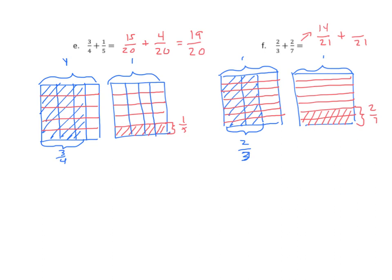Now we're going to partition the second addend using two vertical lines, cutting it into three equal parts. We see that six are shaded — the same as multiplying: seven times three is twenty-one, and we multiply the numerator by three as well to get six. We add and get twenty twenty-firsts. Those are the examples. You have some word problems as well, solved through the same process — they're pretty simple and straightforward so you shouldn't have any problem with them.